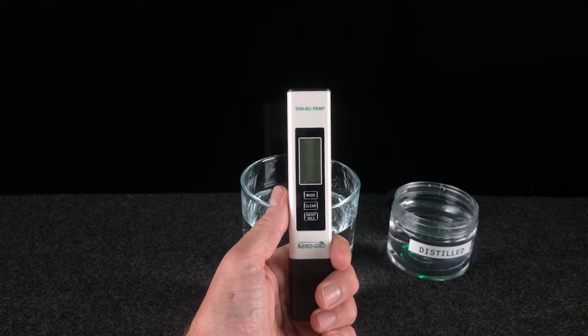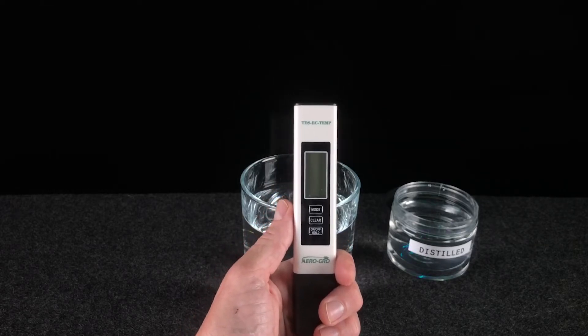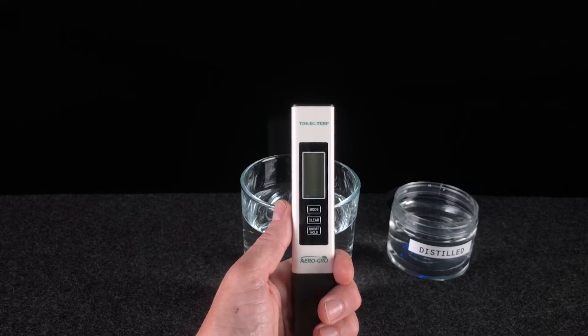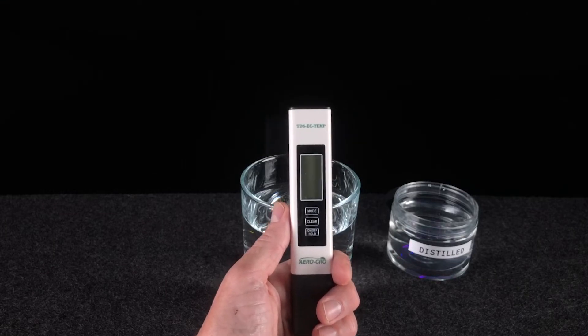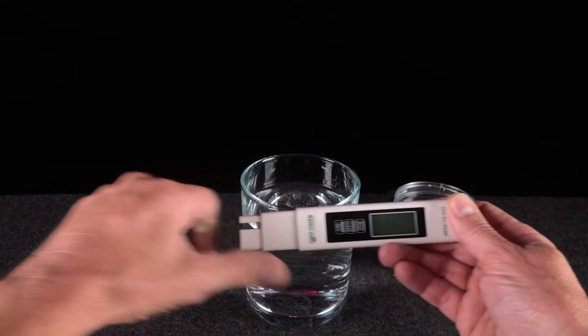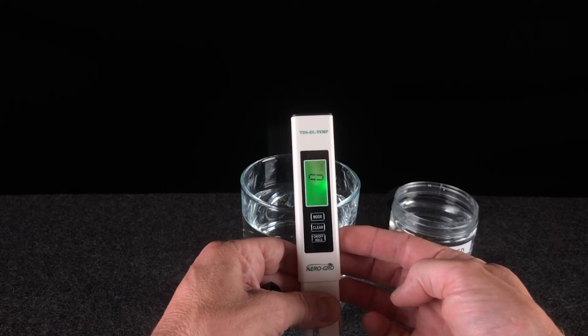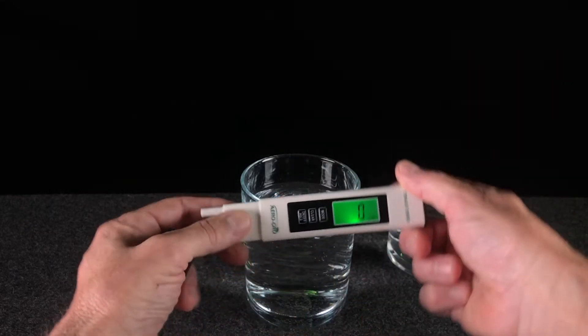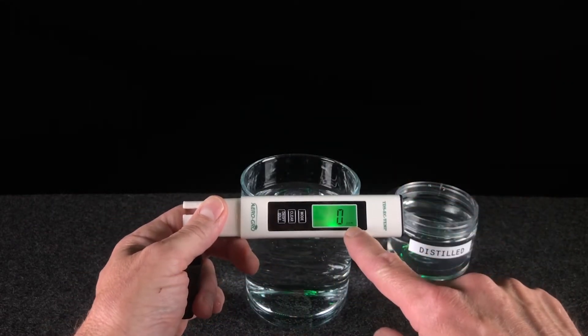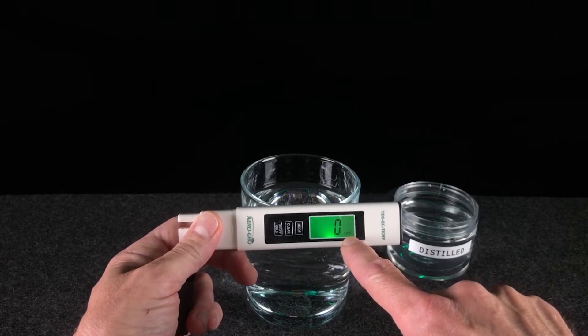The other half of your meter set contains the TDS EC temp meter. This meter will measure total dissolved solids, electrical conductivity, or temperature. Begin the same way by first removing the cap, turning it on, single-clicking the on-off button. You'll notice that when we first begin, we are in TDS mode, which is measured by parts per million, as you can see on the bottom right.